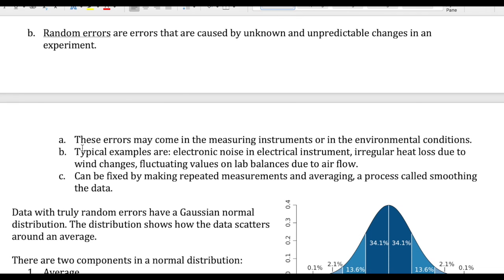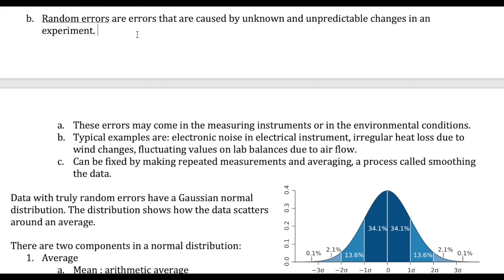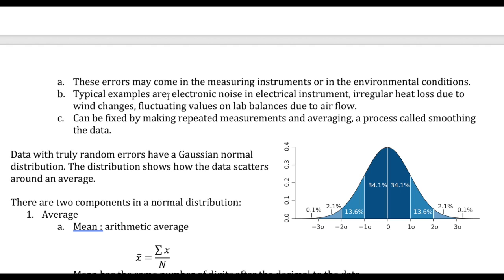Random error is the second type of error. There's no specific, constant source for it — unlike systematic error. It happens because of some type of unpredictability in the environment or the instrument, causing errors to sometimes show up and sometimes not. A common example is electronic noise in electrical instruments: if a wire is old, electron movement is not uniform, so sometimes more and sometimes fewer electrons flow. Static noise when listening to a radio or getting a cell phone signal is a really good example of random error, since it depends on your environment.